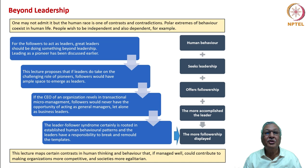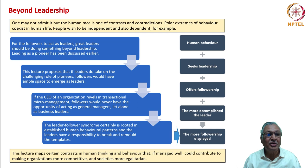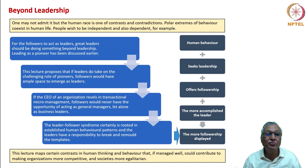One may not admit it, but the human race is one of contrasts and contradictions. Polar extremes of behavior coexist in human life. People wish to be independent but also want to be dependent. For followers to act as leaders, great leaders should be doing something beyond leadership. This lecture proposes that if leaders take on the challenging role of pioneers, followers would have ample space to emerge as leaders.